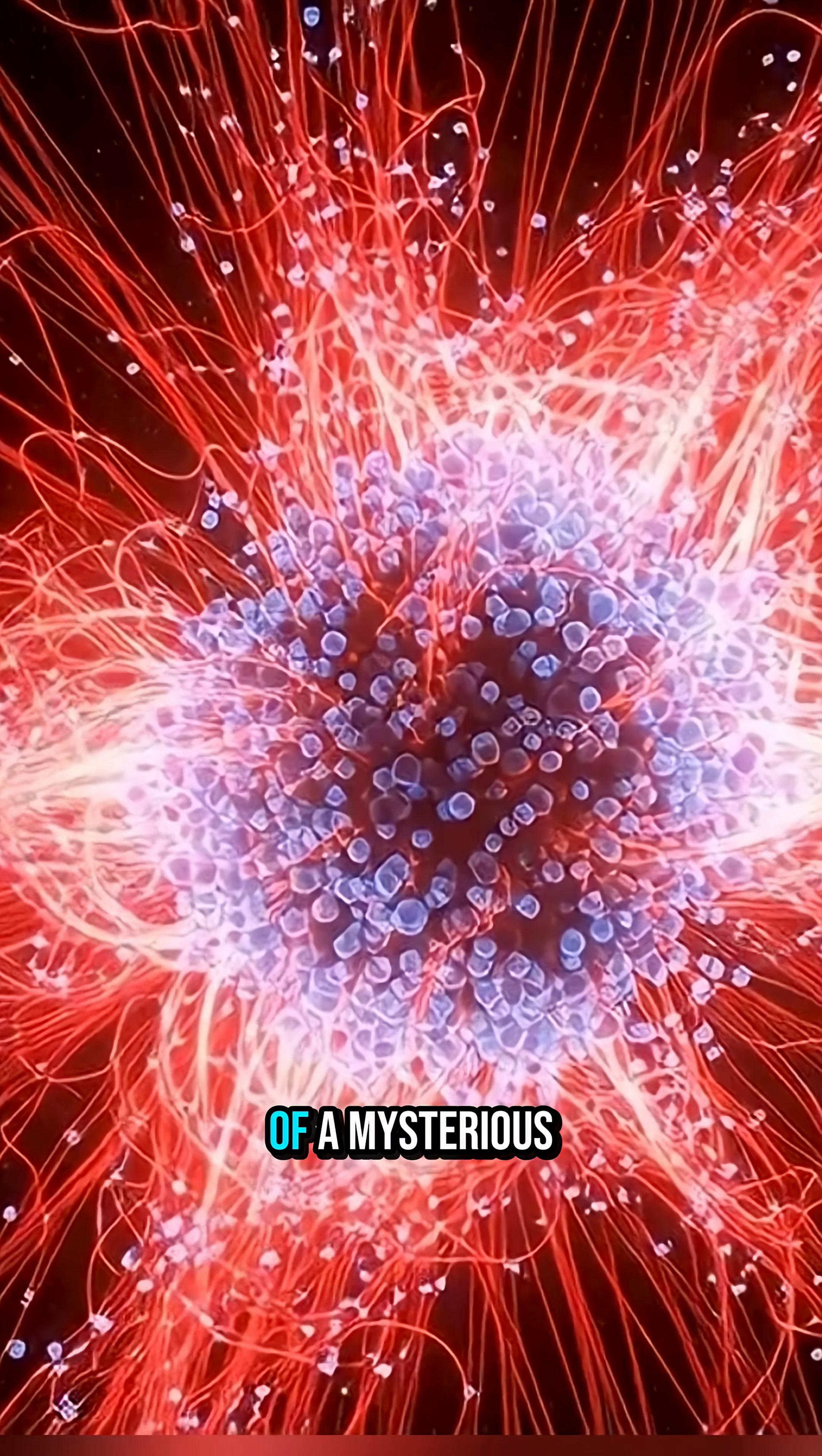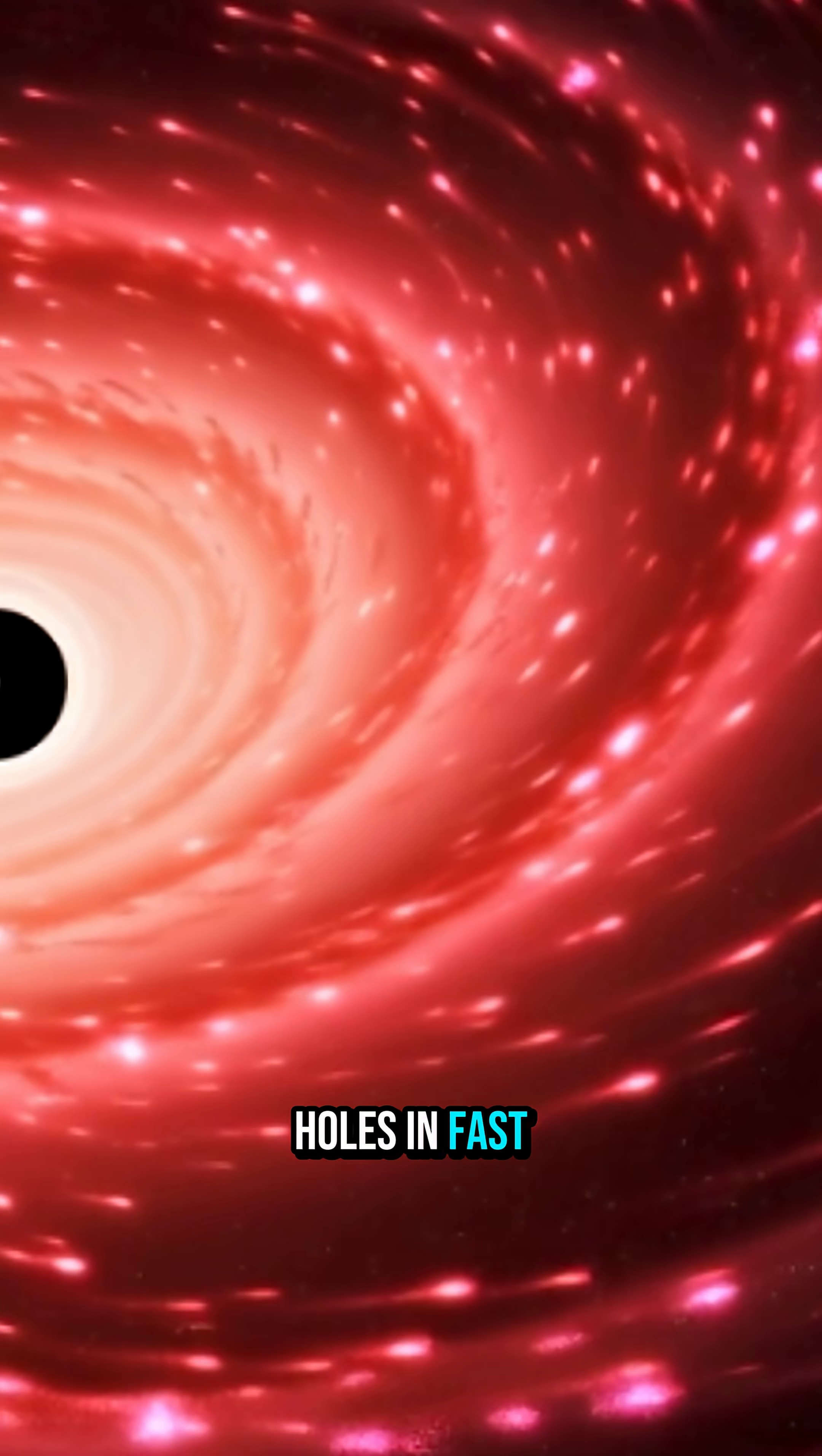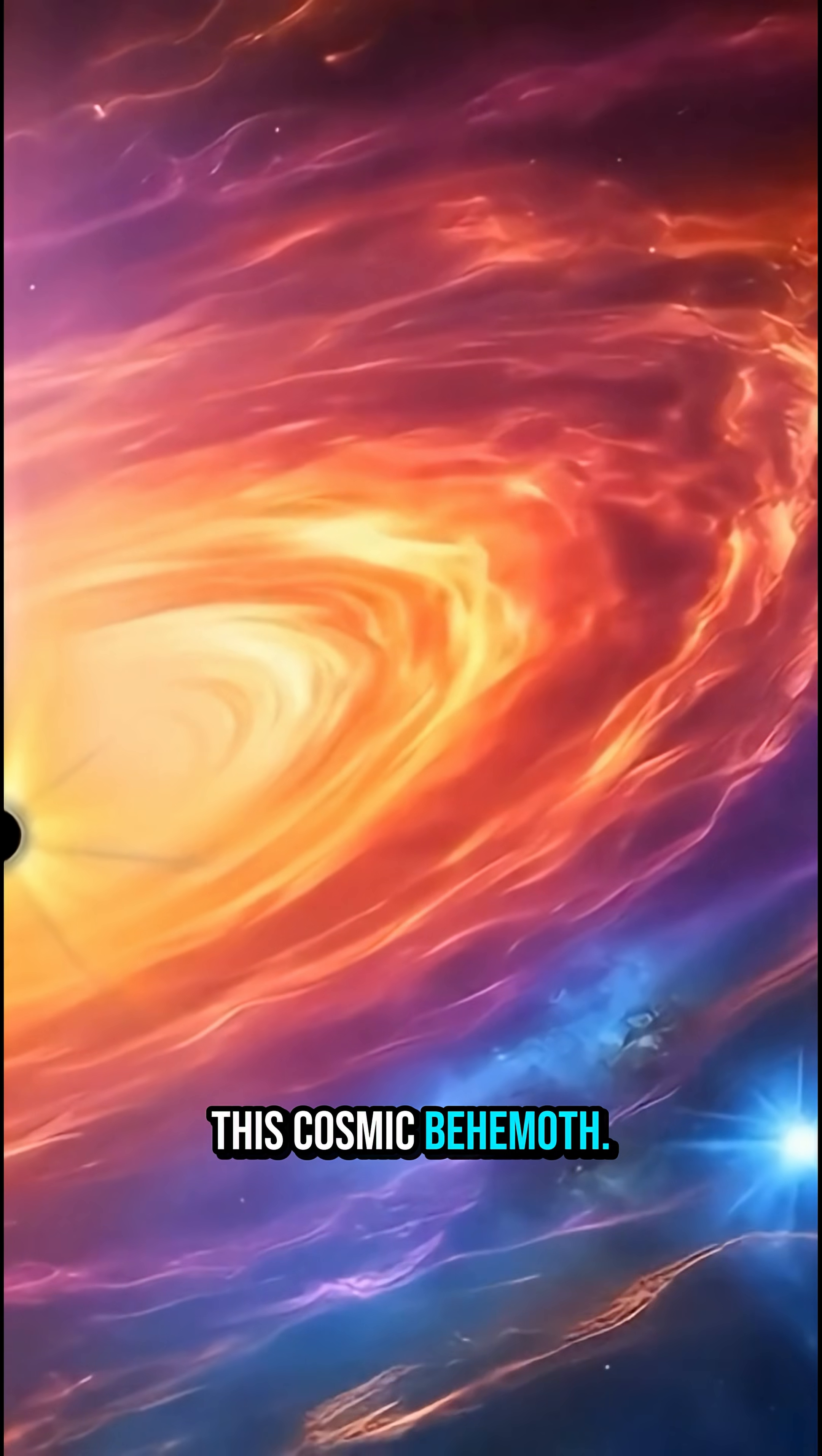It's part of a mysterious family of objects called little red dots, extremely compact, intensely glowing in red infrared, possibly supermassive black holes in fast-growth mode. The observations show signatures like ionized hydrogen, Paschen series, and helium absorption lines, clues that help astronomers gauge distance, mass, and the environment of this cosmic behemoth.